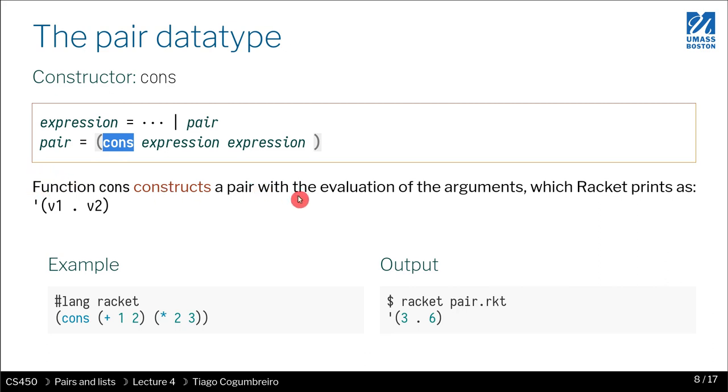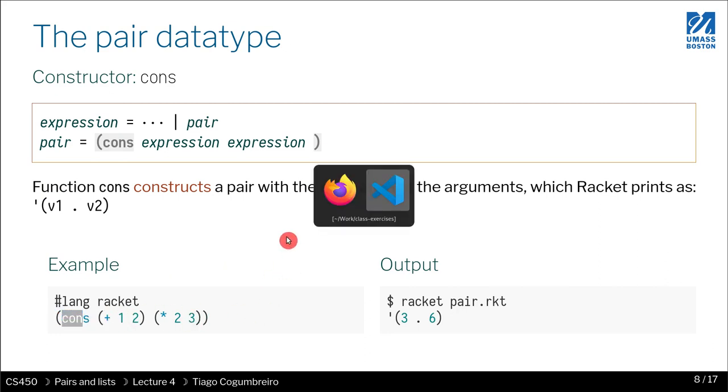You can create a pair with CONS quite simply. You write CONS and then put the two arguments, which are going to be the contents of the pair.